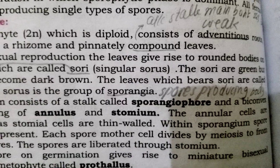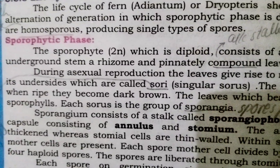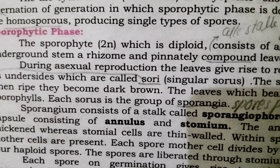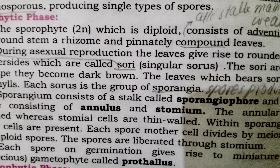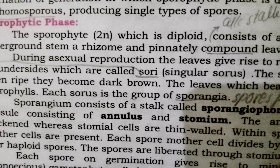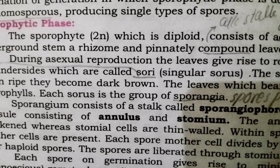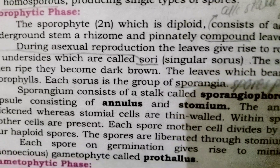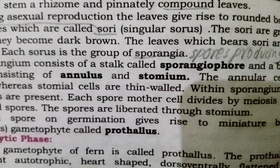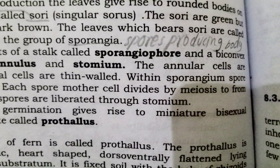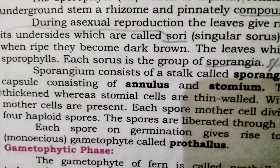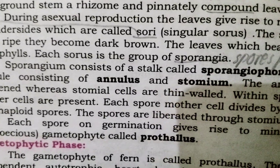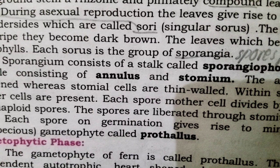The leaves which bear sori are called sporophylls. Each sorus is a group of sporangia. Each sporangium is a reproductive, spore-producing body. The sporangium consists of a stalk called the sporangiophore and a bi-convex capsule consisting of annulus and stomium.